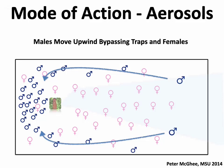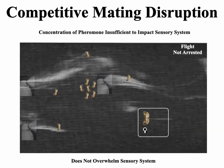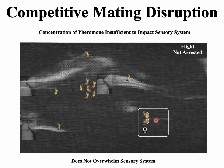What about the mode of action of aerosols compared to hand-applied dispensers? Peter McGee's PhD research at Michigan State under Larry Gutt found that males move upwind toward an emitter, following along the edges of the large pheromone plume and accumulating behind the emitters — leaving females only downwind with no males present, so no mating occurs. The mode of action is displacement. Competitive attraction is how aerosols work, just as with hand-applied dispensers. The pheromone concentration is insufficient to impact the sensory system, so flight is not arrested — males move up toward aerosol emitters, accumulate behind them, and females downwind have no males in their area.